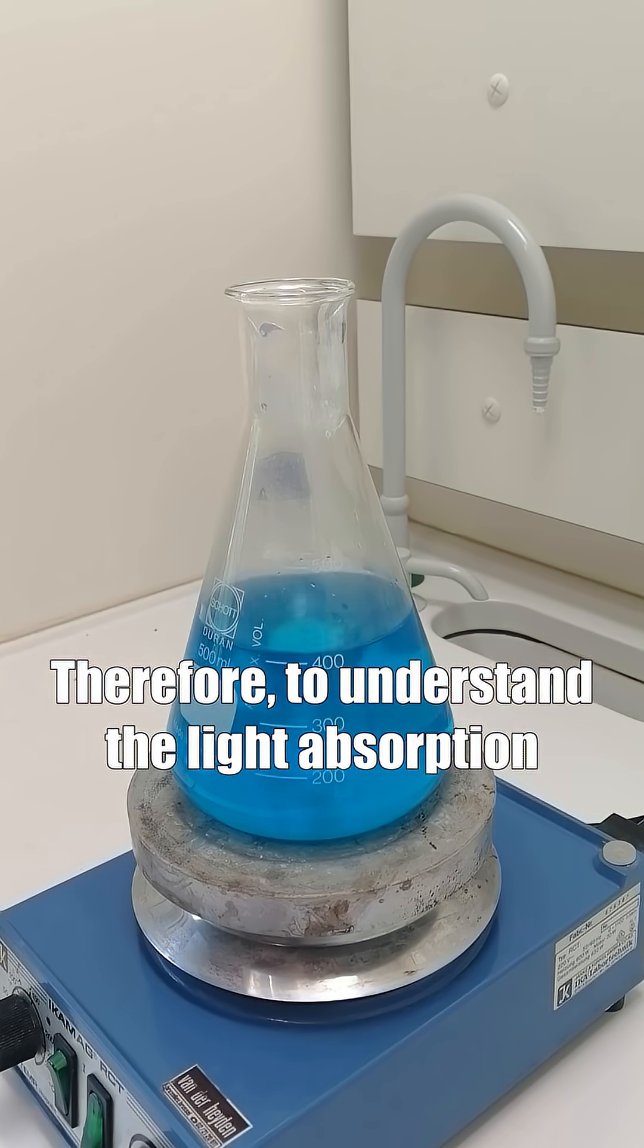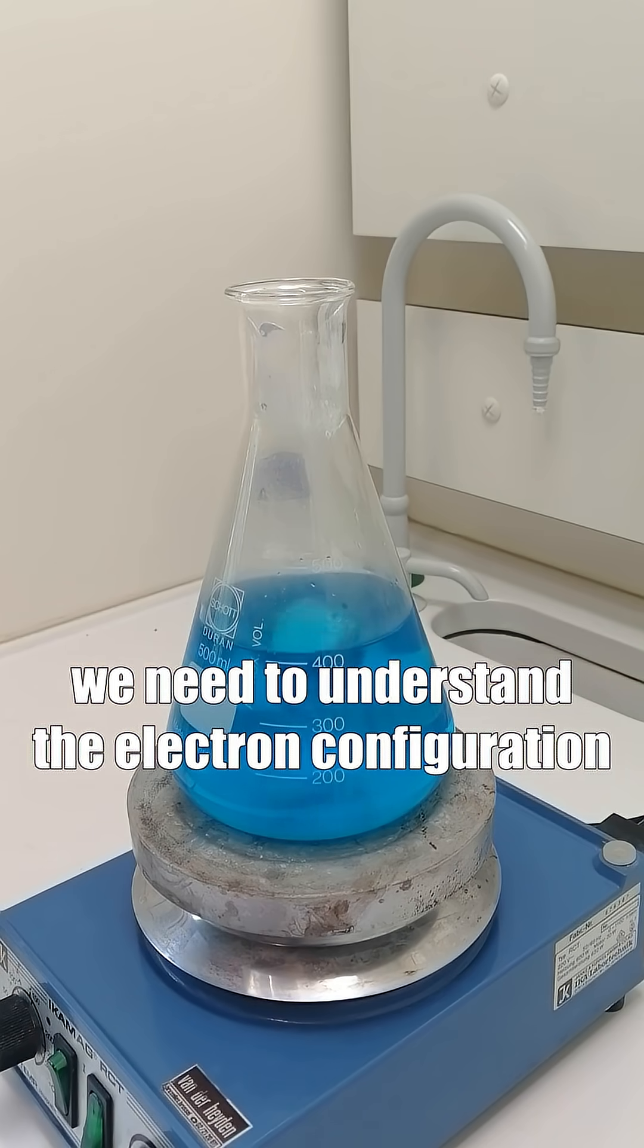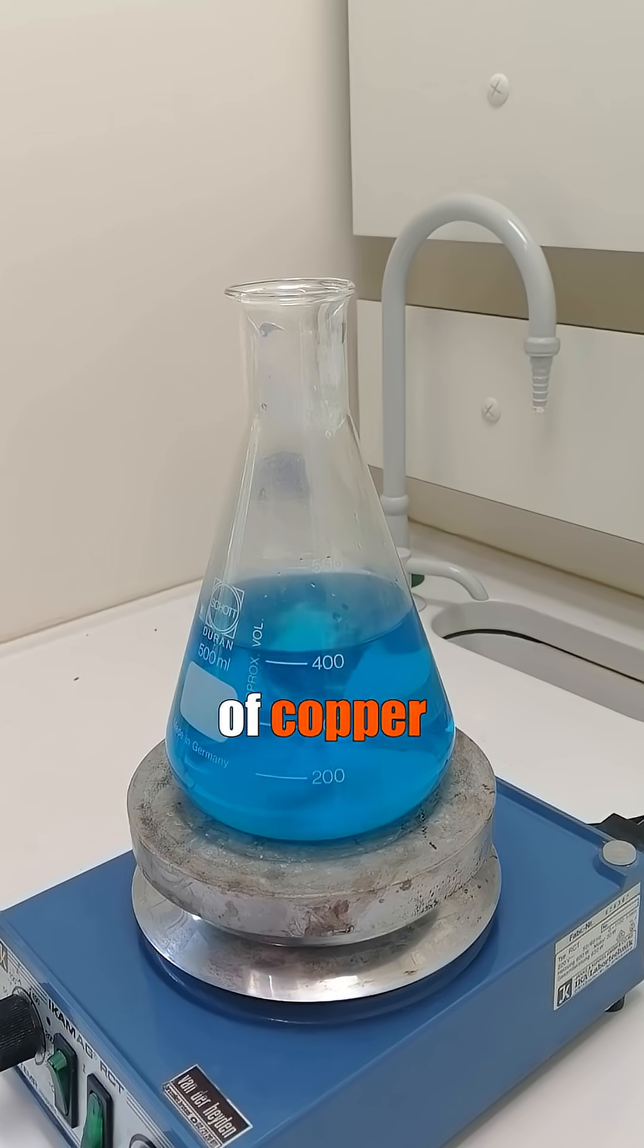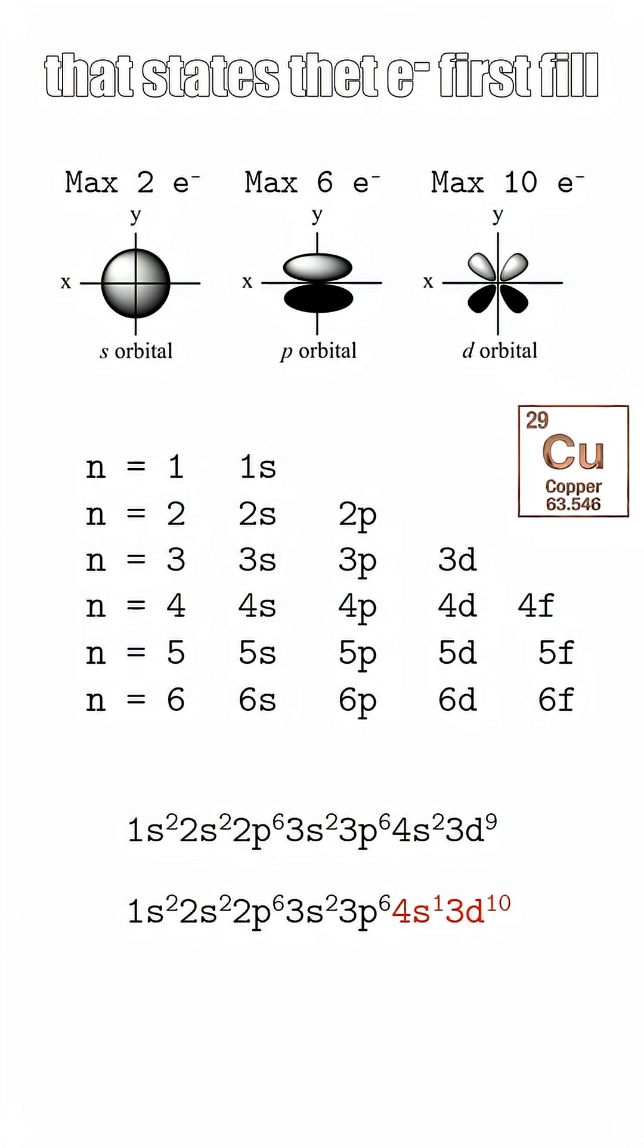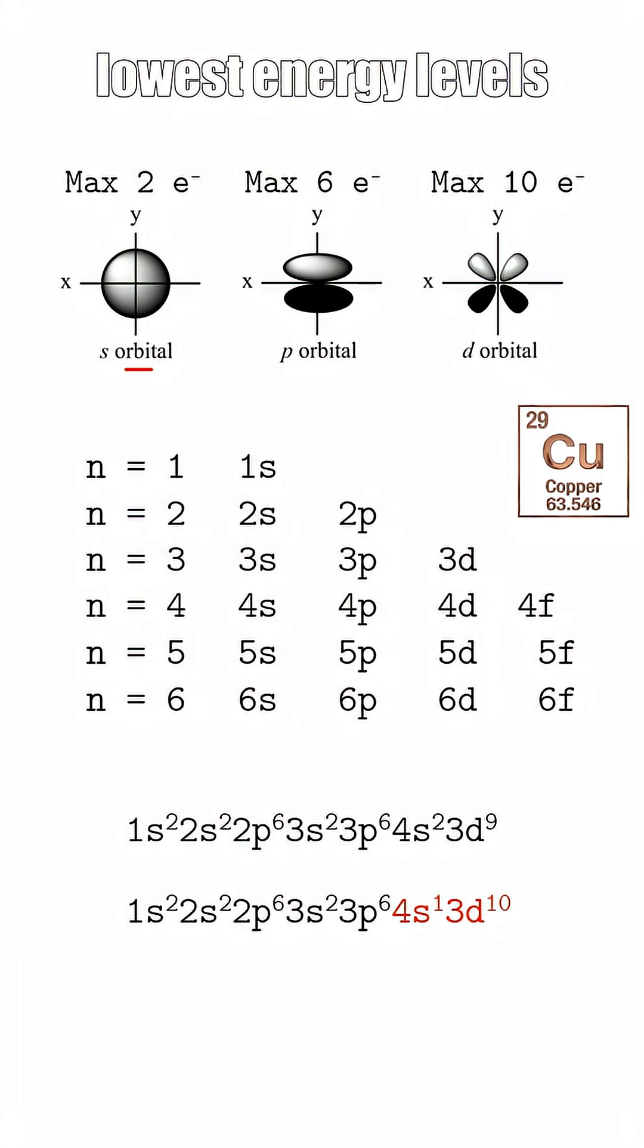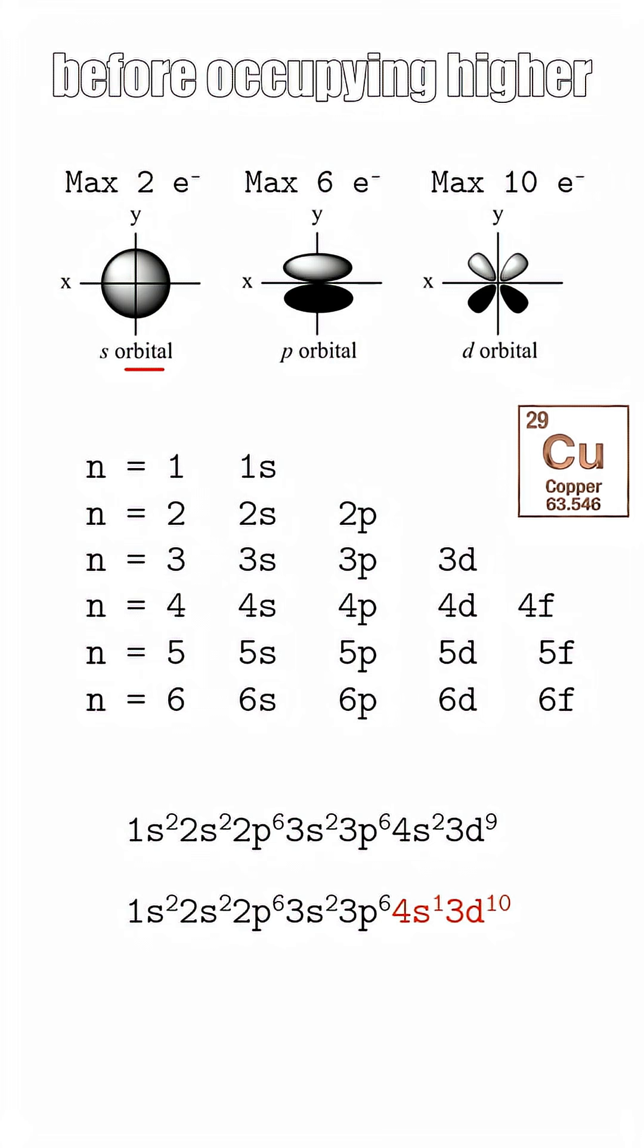Therefore, to understand the light absorption, we need to understand the electron configuration of copper. Electrons are arranged in orbitals. There is a principle that states that electrons first fill the lowest energy levels available before occupying higher energy levels.